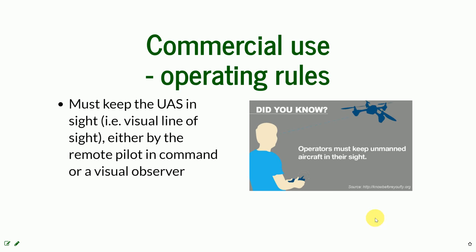The operator must keep the UAS within visual line of sight, and this must be done by the remote pilot or by a visual observer. You cannot fly intentionally over people.